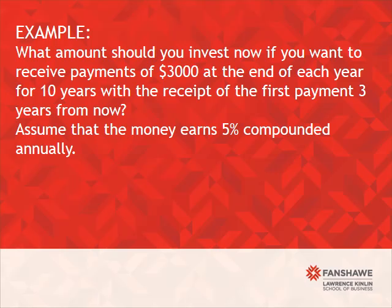I think the best way to go through this is just to do an example. What amount should you invest now if you want to receive payments of $3,000 at the end of each year for 10 years, with the receipt of the first payment three years from now? We will assume that money earns 5% compounded annually.